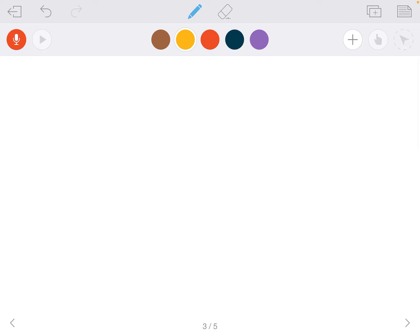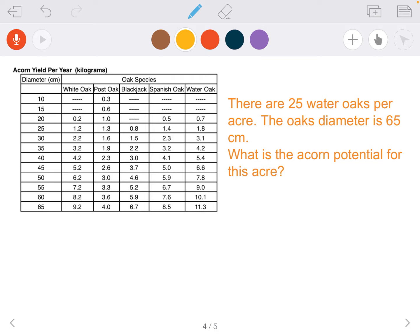So keeping that in mind, we are going to look at a habitat that has 25 water oaks per acre. The oak's diameter is 65 centimeters. What is the acorn potential for this acre? If we have 25 water oaks and they each produce 11.3 kilograms of acorns a year, we're going to multiply that times the amount of oaks that we have in our forest. So 25 times 11.3 kilograms.